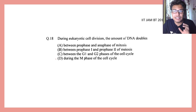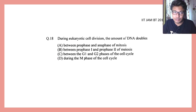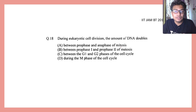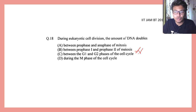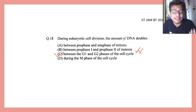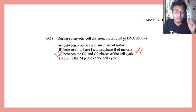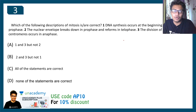These questions are chosen because of their exam relevance. For example, in IIT JAM BT 2017, a similar question was asked: during eukaryotic cell division, the amount of DNA doubles in which phase? The answer is S phase, which is between G1 and G2 — so option C is correct. The goal is to show you that exams ask about specific events that happen in the cell cycle, which is an important factor to consider.